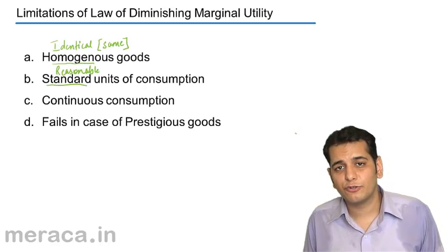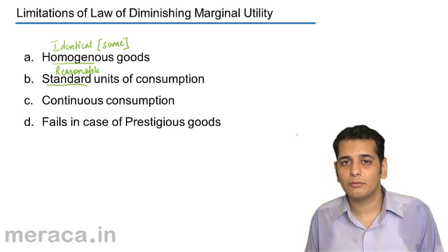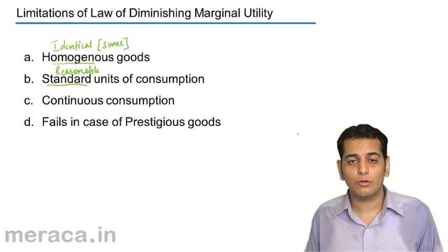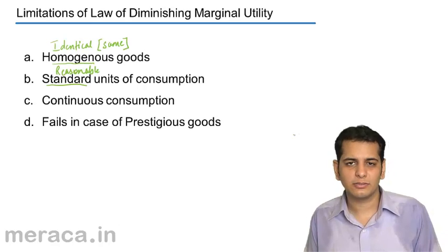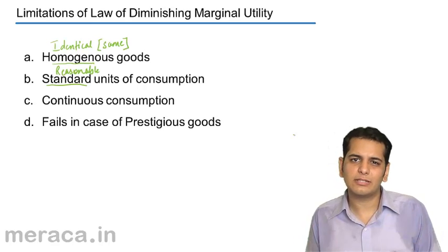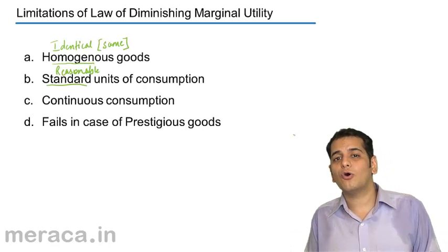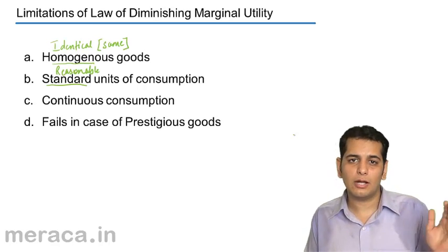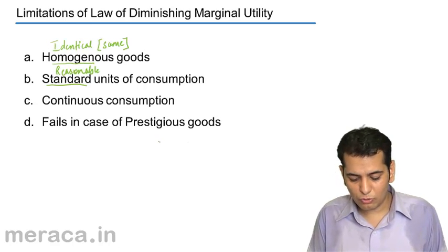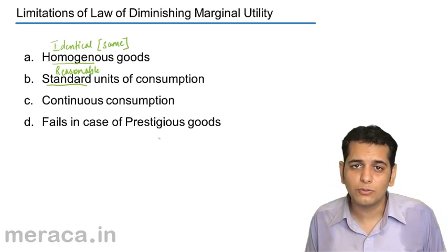The law fails in case of prestigious goods. Wouldn't you like to have more gold? Or more diamonds? Or more money? The more of these things you get, the more the happiness, the more the satisfaction level, the more the utility you derive. So for the law to operate, you have to exclude prestigious or superior goods. The law does not operate for such goods — it operates only where normal goods are considered.